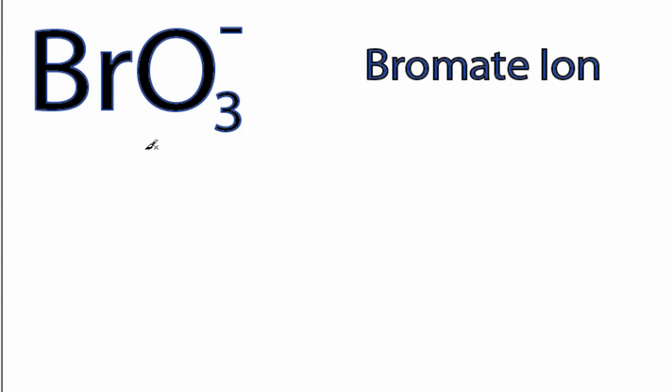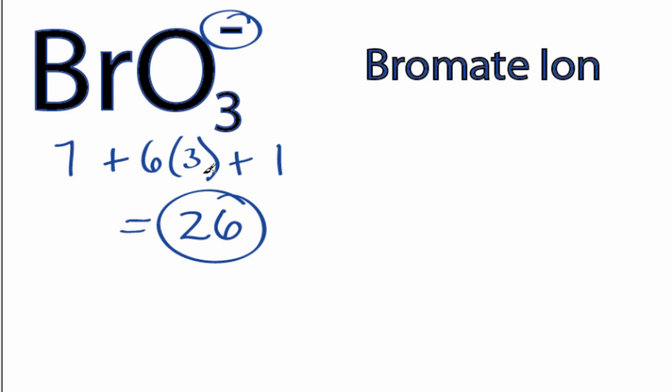This is the BrO3- Lewis structure. Bromine has 7 valence electrons, oxygen has 6, we have 3 oxygens, and then we need to add this extra valence electron here for a total of 26 valence electrons for BrO3-.